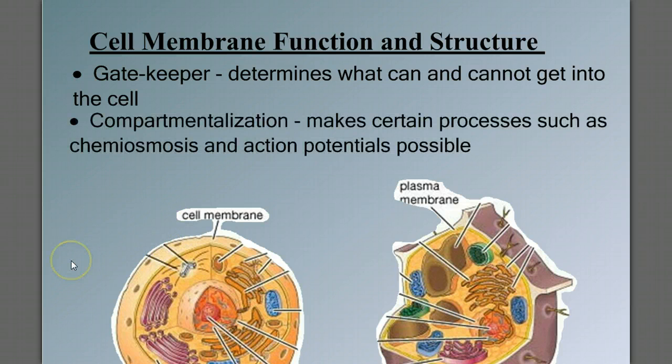The next function is compartmentalization. By creating a distinct internal and external environment, we allow for such processes as chemiosmosis and making processes such as the action potential possible. We have to have a distinct outside and inside with some barrier across which things can happen.